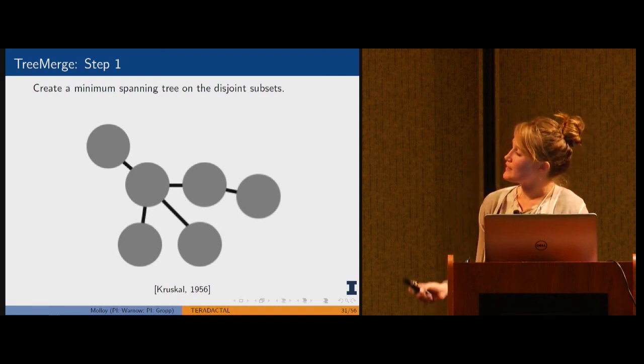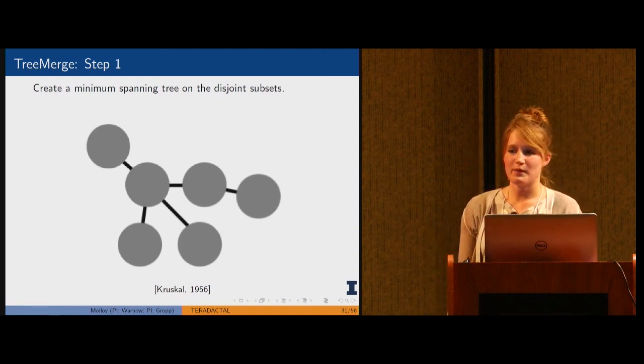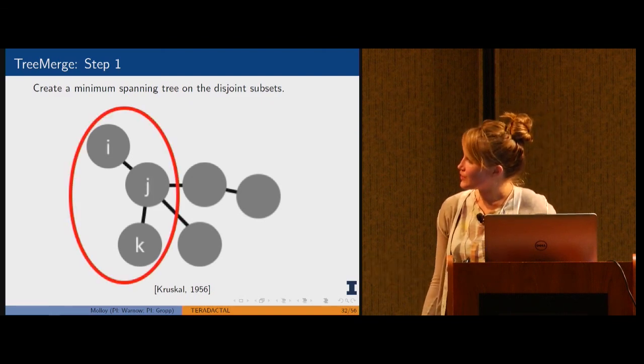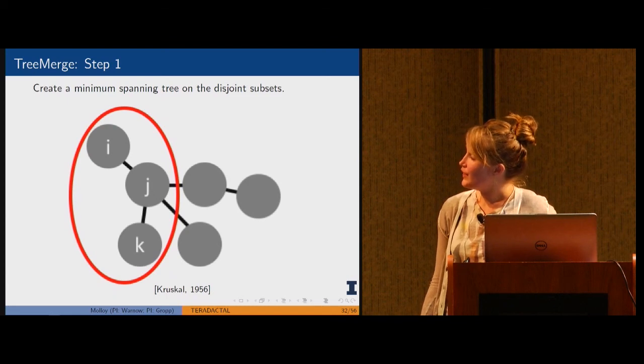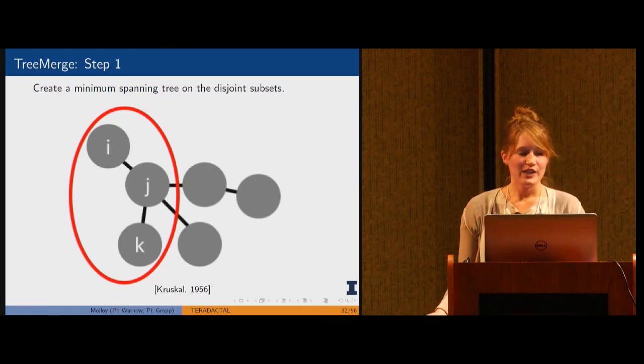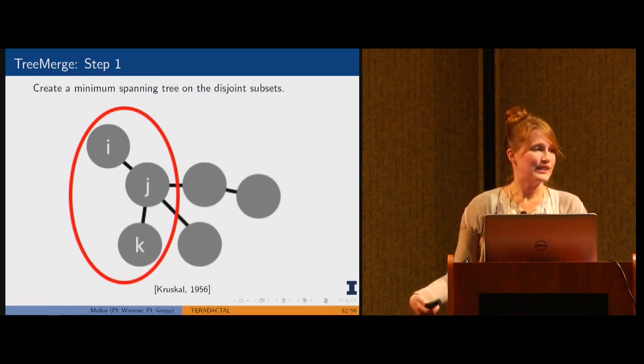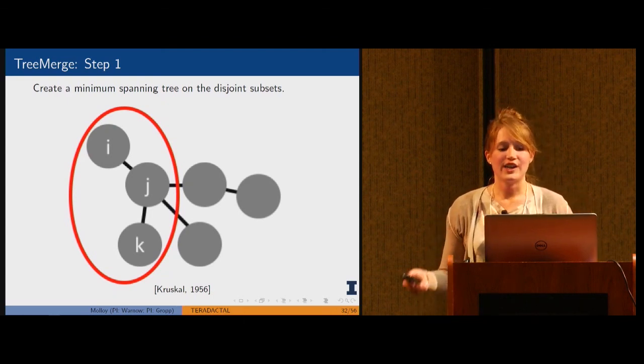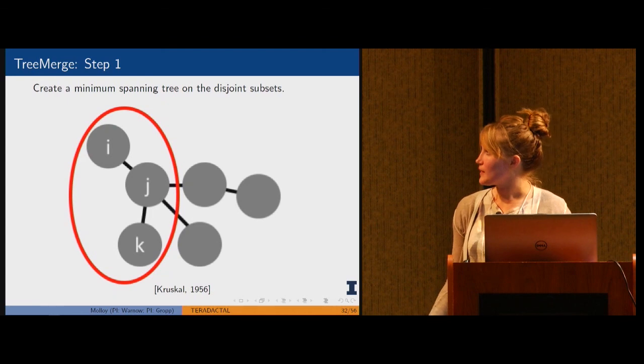To focus in on TreeMerge, we're basically going to take our disjoint subsets and build a minimum spanning tree on them. If we look at a small part of this tree, we have subsets i, j, and k connected by two edges. Now we want to decide if we have a tree Ti, tree Tj, and tree Tk, how can we get a tree Tijk merged across all those subsets?